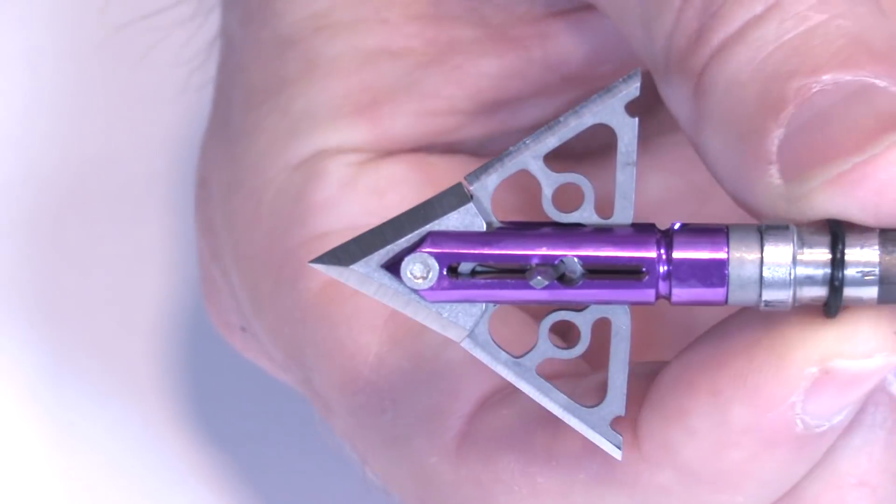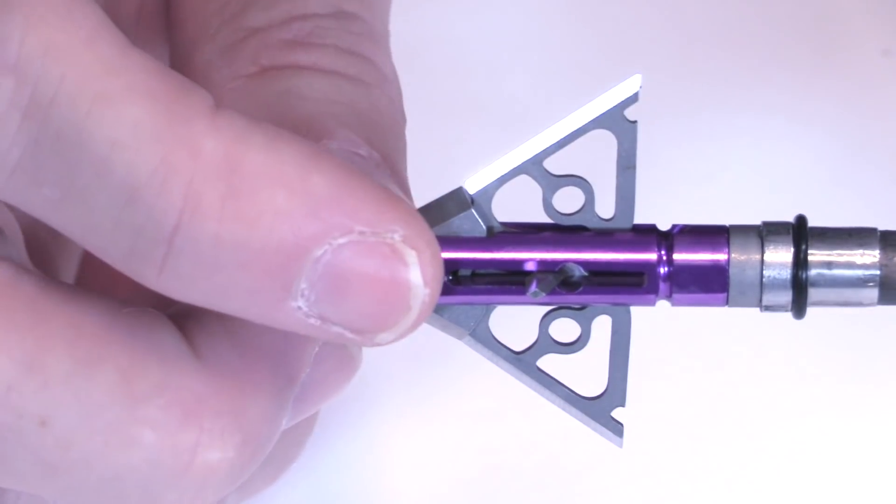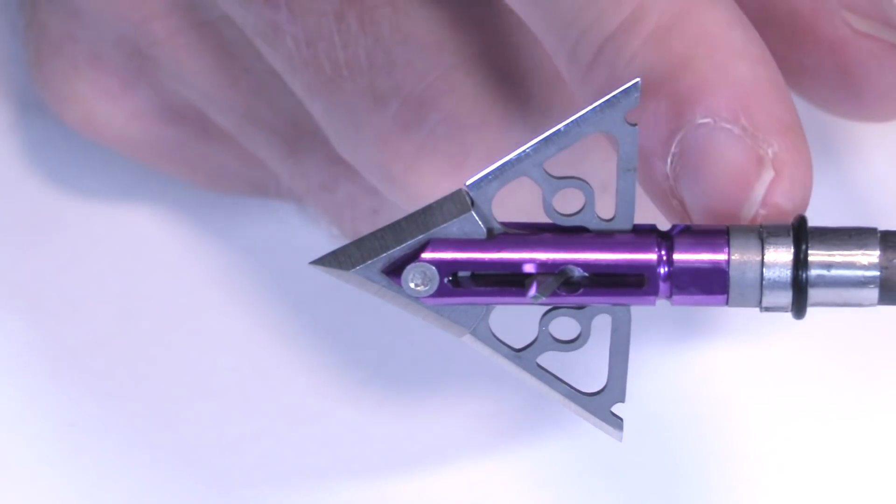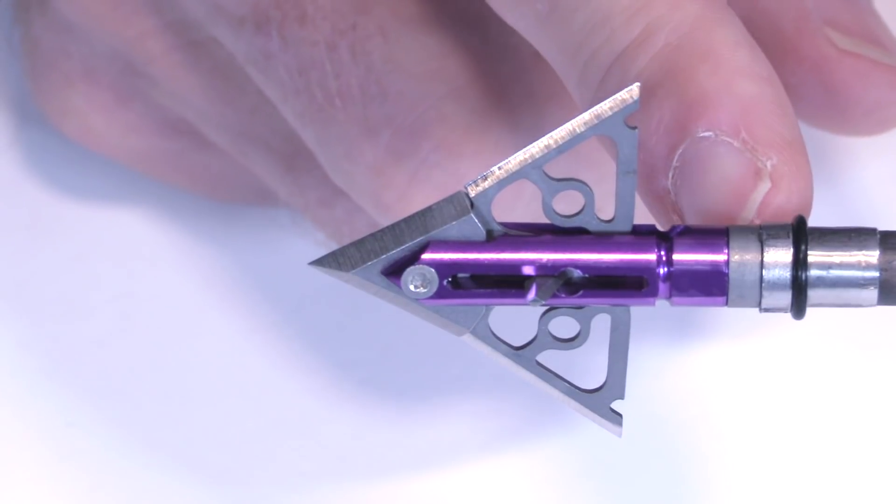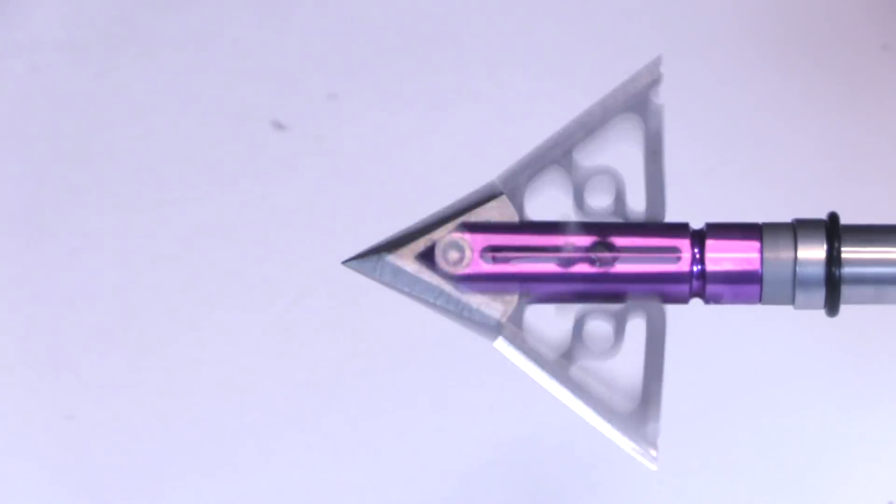Now another unique thing about these heads is they have a weight collar. So without the weight collar you have a hundred grain head and with the weight collar you boost it up to 125 grains. So that's the hybrid X mini.